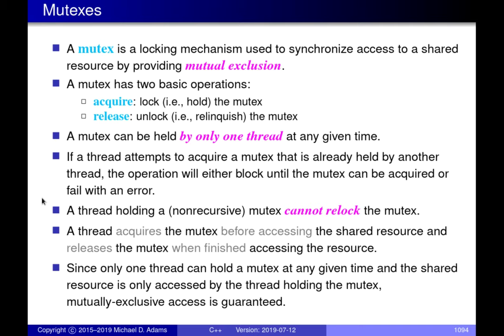Mutexes have two basic operations: what's called acquire — you can acquire, hold, or lock a mutex, they essentially all mean the same thing — or you can release, unlock, or relinquish a mutex. You can think of a mutex as sort of like a unique token that you can hold or not hold. It can't be duplicated or cloned; there's only one of them in existence.